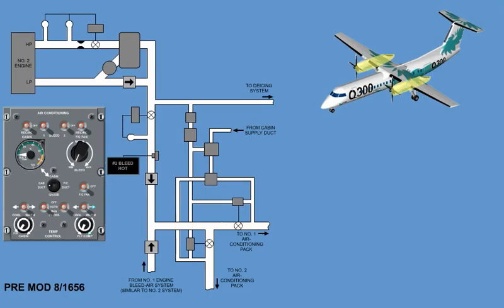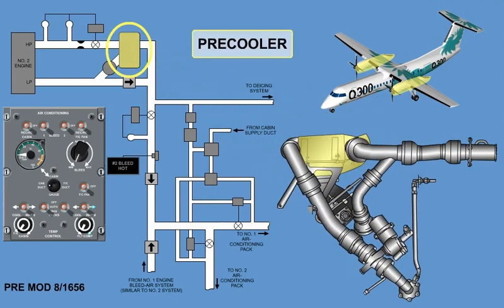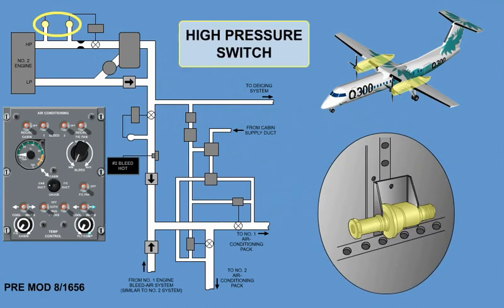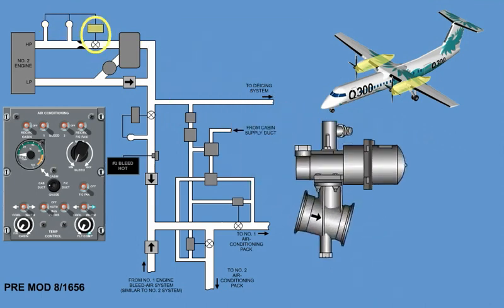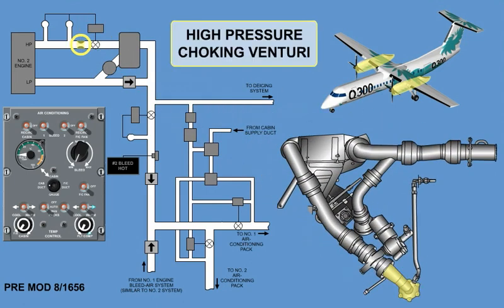Within each nacelle, the bleed air system consists of a pre-cooler, two high-pressure switches, a high-pressure shut-off valve, and a high-pressure choking venturi.